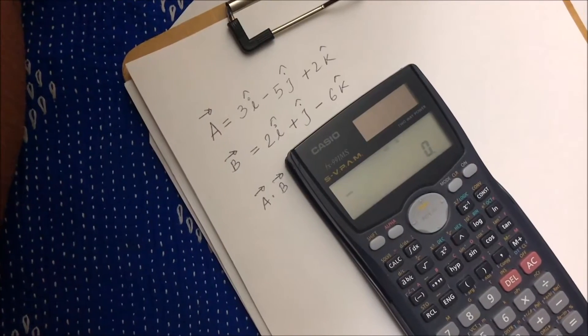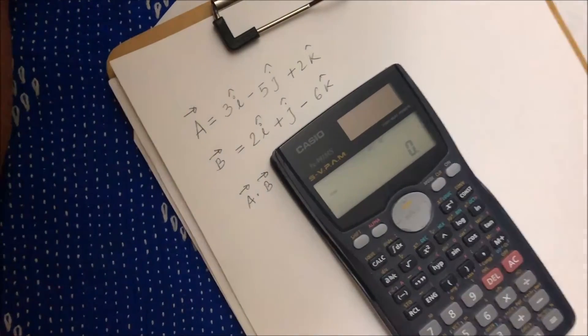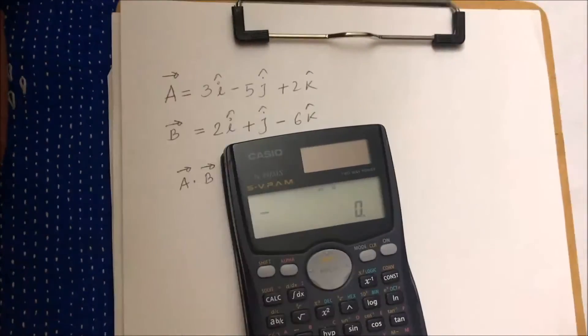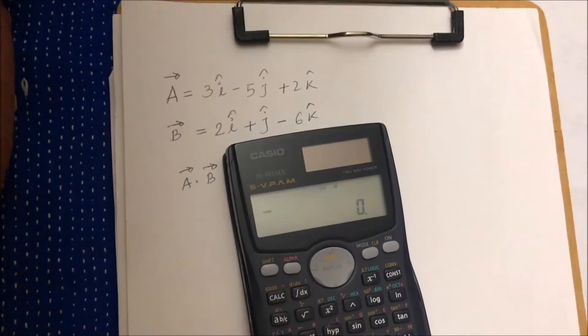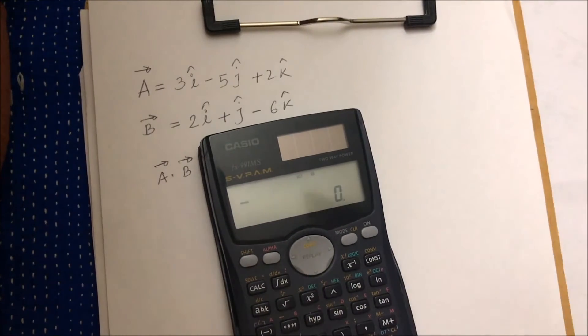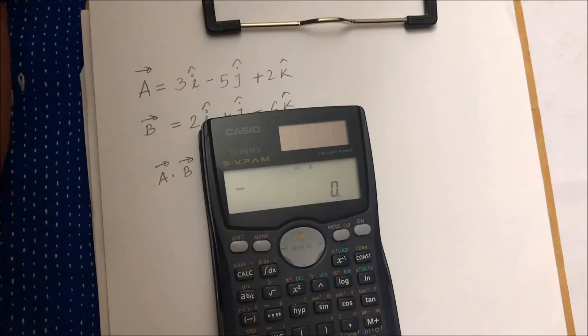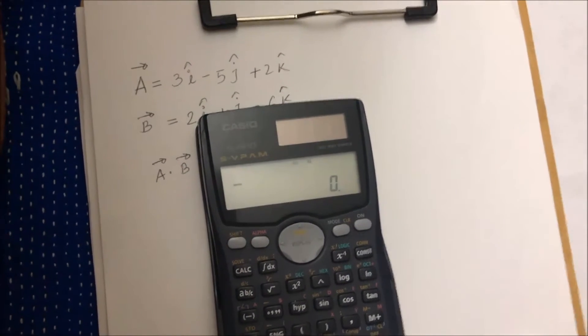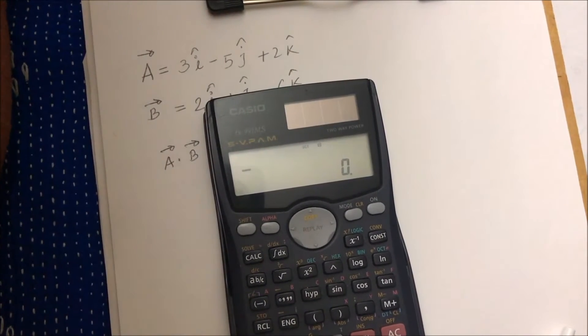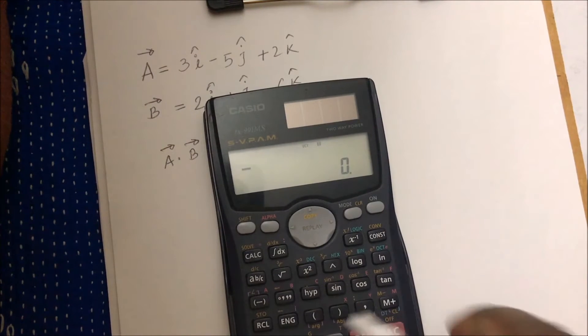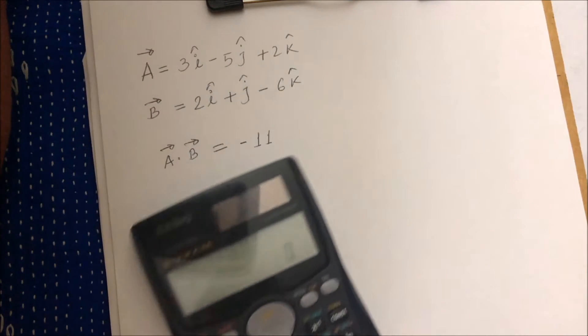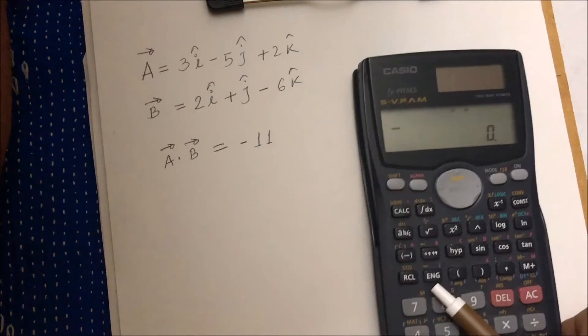Hello everyone, welcome to my channel. Today I will show you how to do the vector dot and cross product using a 991 MS calculator. Although it's sometimes really easy to do vector addition and multiplication, especially the dot multiplication, sometimes the cross multiplication is a little harder and you have a chance to make mistakes.